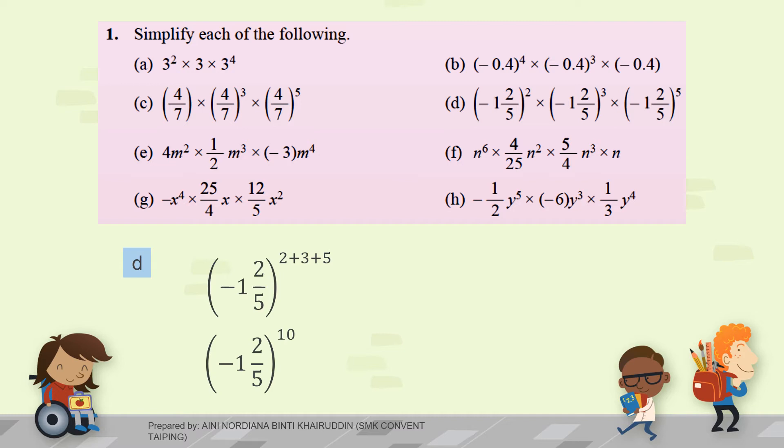Let's move on to question E. There is a coefficient here. So, you have to multiply the coefficient separately. So, you have a bracket. Multiply the coefficient, and then the base M with index. So, you leave the answer like this. You can solve this by using your calculator.